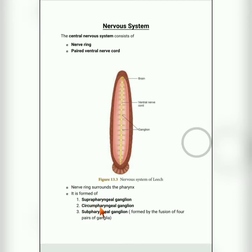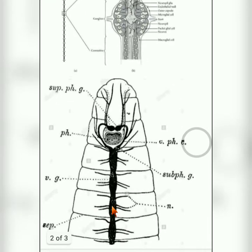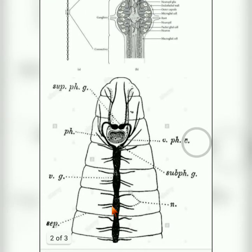The first one is the suprapharyngeal ganglion, the second one is the circumfaryngeal ganglion, and the third one is the subpharyngeal ganglion. You can see these in this picture.